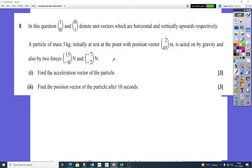Right, okay, so let's have a look at this question. There's a particle of 5 kg initially at rest at that position, is acted on by gravity, that's minus 9.8, and also these forces, forces 1 and 2.